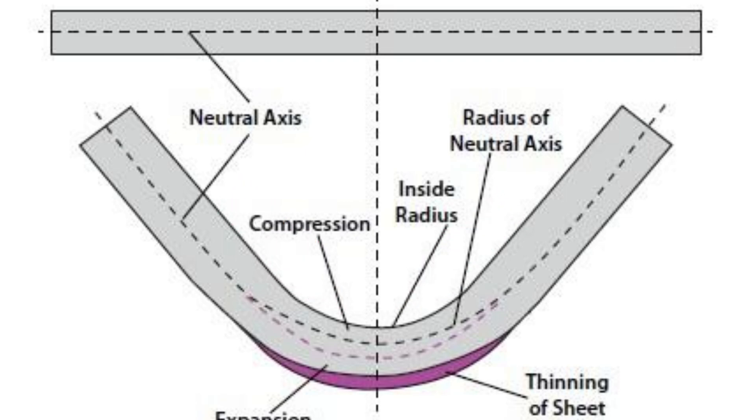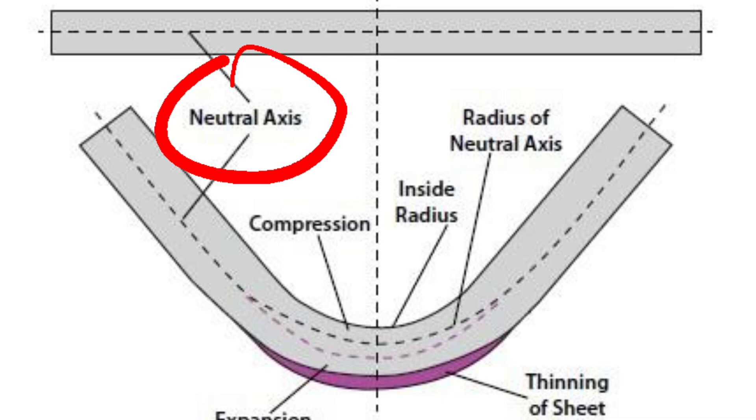Between the tension and compression layers, there is a thin layer of metal where there is neither compression nor tension — that plane is called the neutral axis. The ratio between the inside edge to the neutral axis and the thickness of the metal is known as the k-factor, which is very important and varies from metal to metal, thickness to thickness, and material to material based on the environment in which the metal is being processed. If you get the k-factor wrong, you will get incorrect press brake folds every single time.